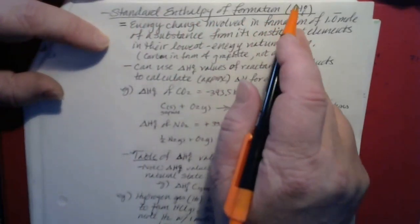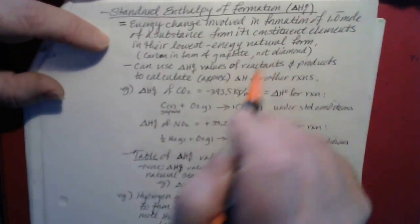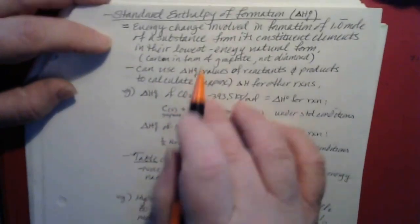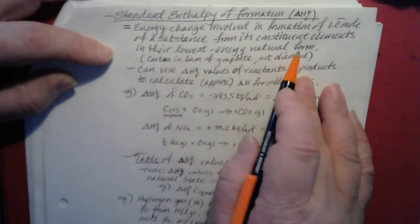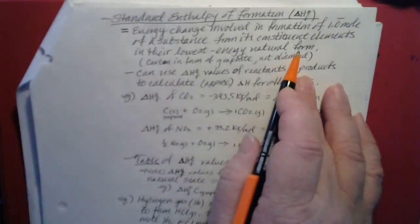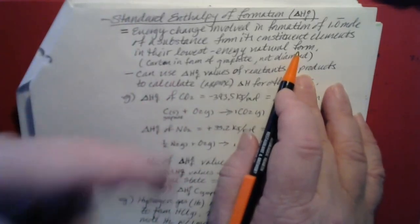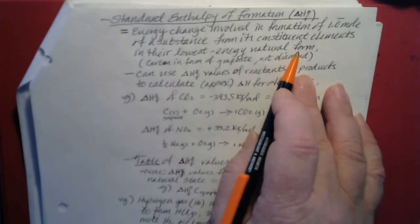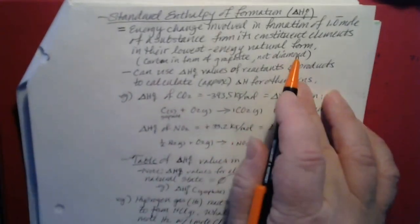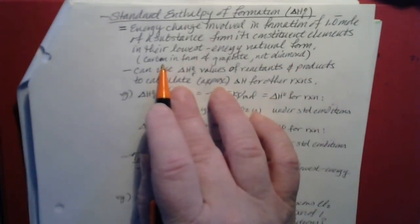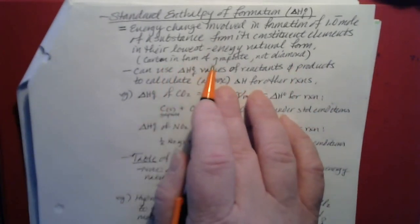Another special type of enthalpy is the standard enthalpy of formation, written as delta H°f. The standard enthalpy of formation is the enthalpy for a reaction where you synthesize a compound from its elements in their lowest energy natural form. If an element is normally found as a solid at room temperature and normal pressure, you use the solid form as your starting material; if it's normally a gas, you use the gaseous form.